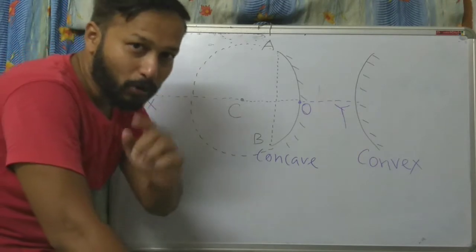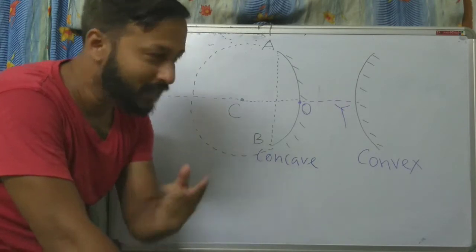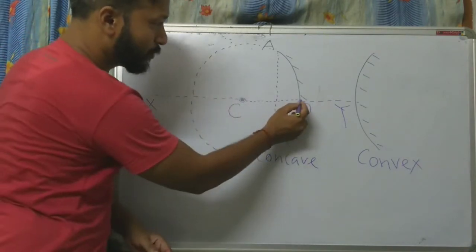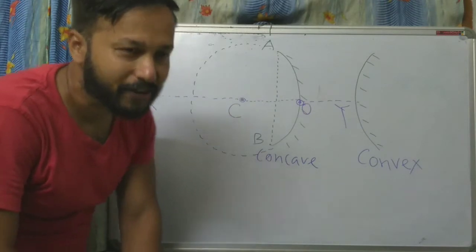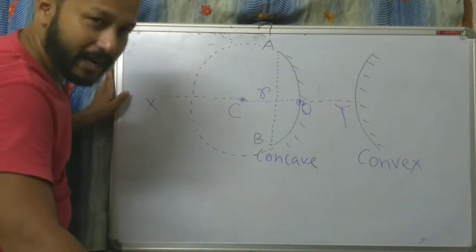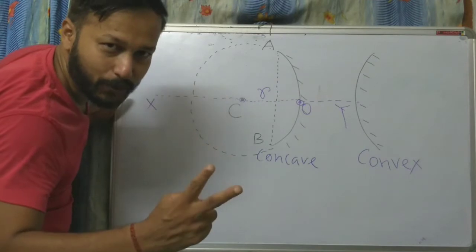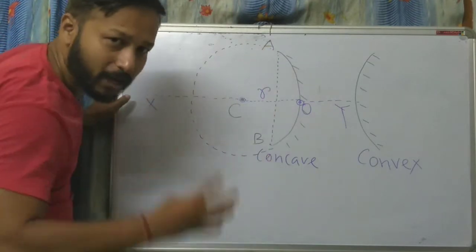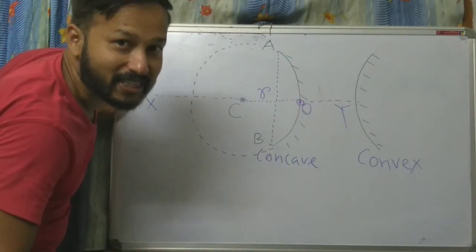One more thing: the distance between the center of curvature C and the pole O is called the radius of curvature, represented by R. So the terms we have discussed so far are: pole, center of curvature, aperture, principal axis, and radius of curvature.